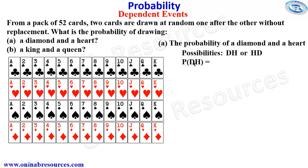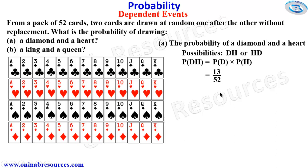The probability of picking diamond first followed by hat is the probability of picking diamond multiplied by the probability of picking hat. For the probability of picking diamond, we need to know the number of cards that are diamond. There are 13 diamonds, so it's going to be 13 over the total number of cards, which is 52. So we have it as 13 over 52, which is the probability of picking the first card as diamond.